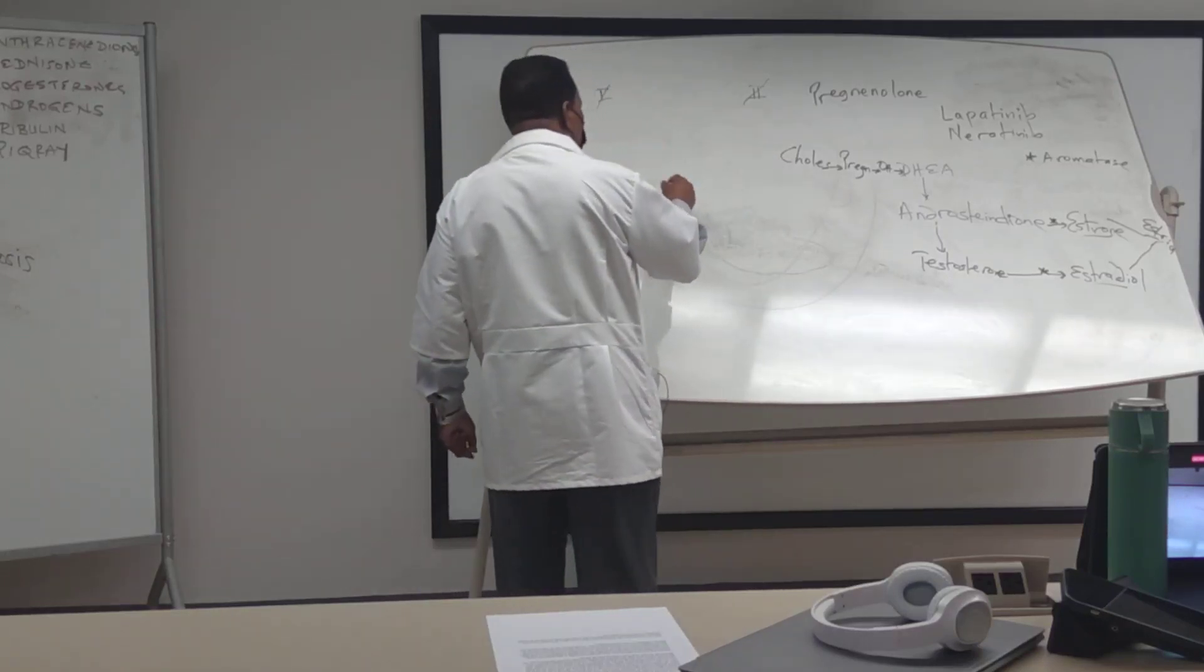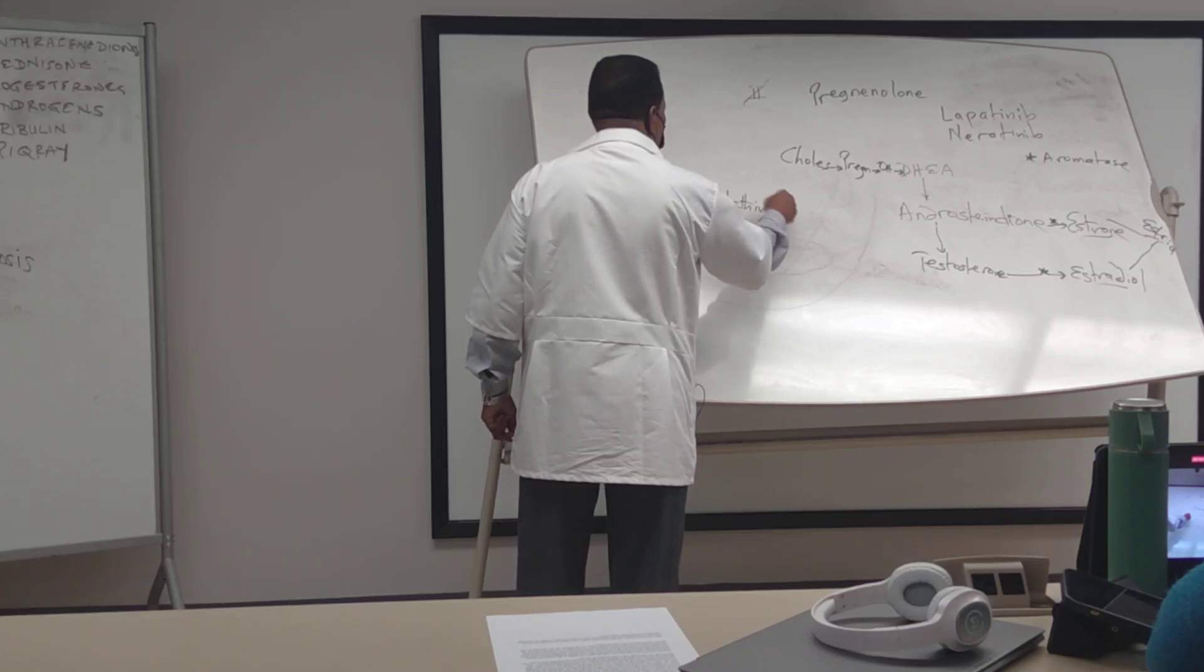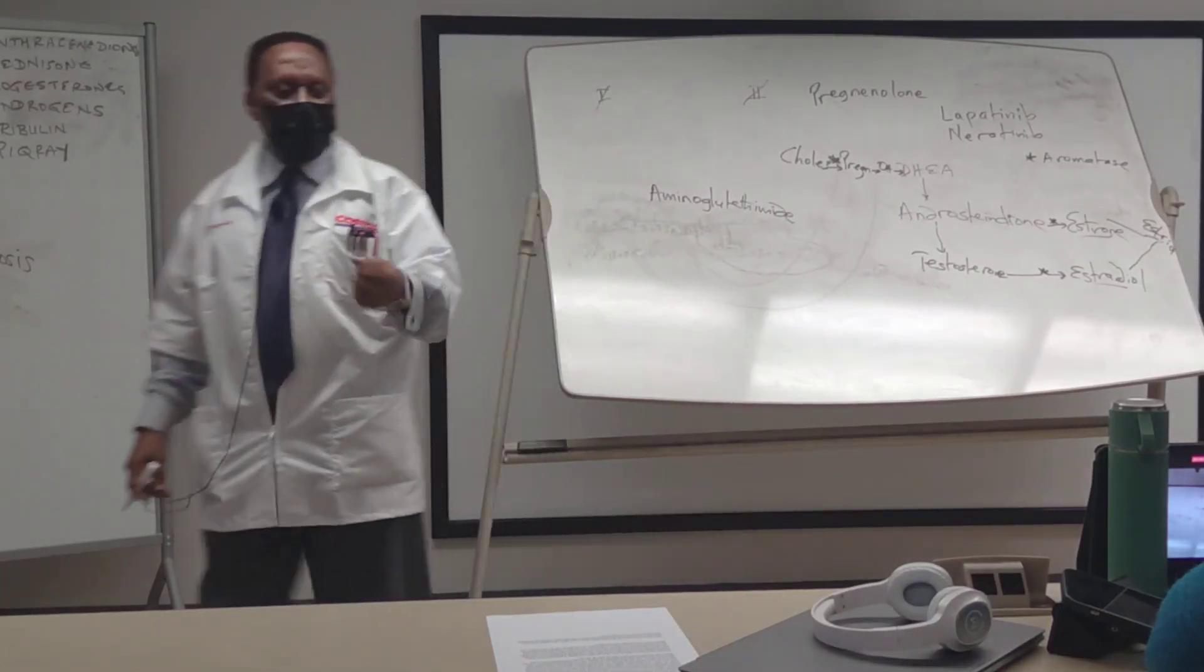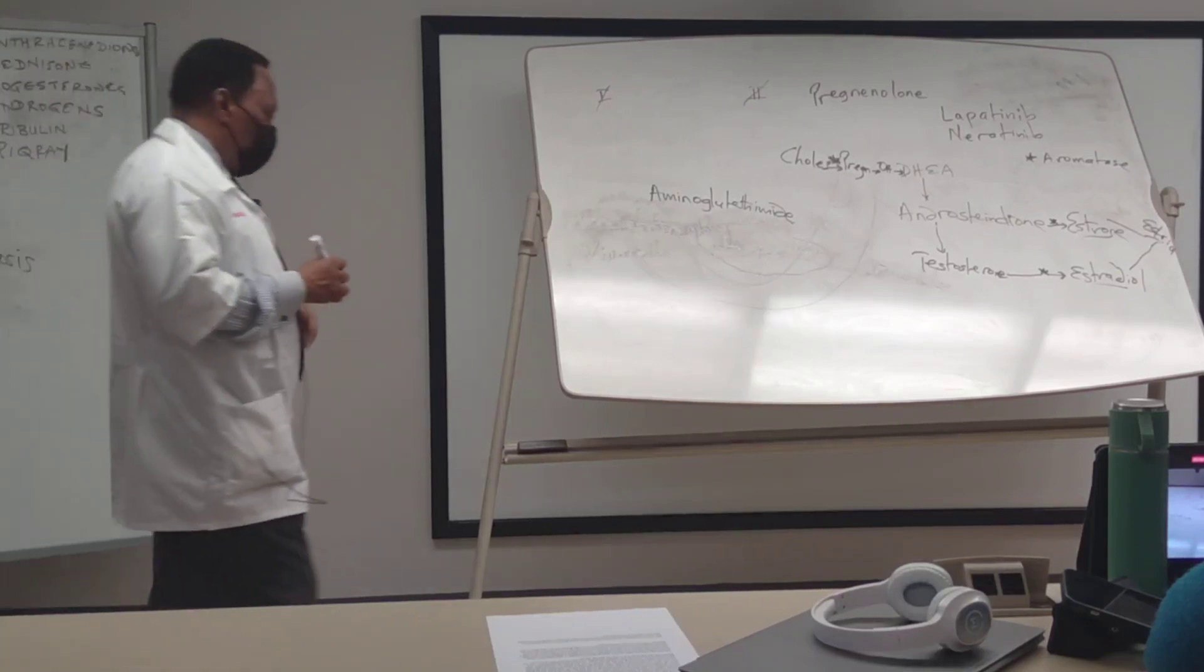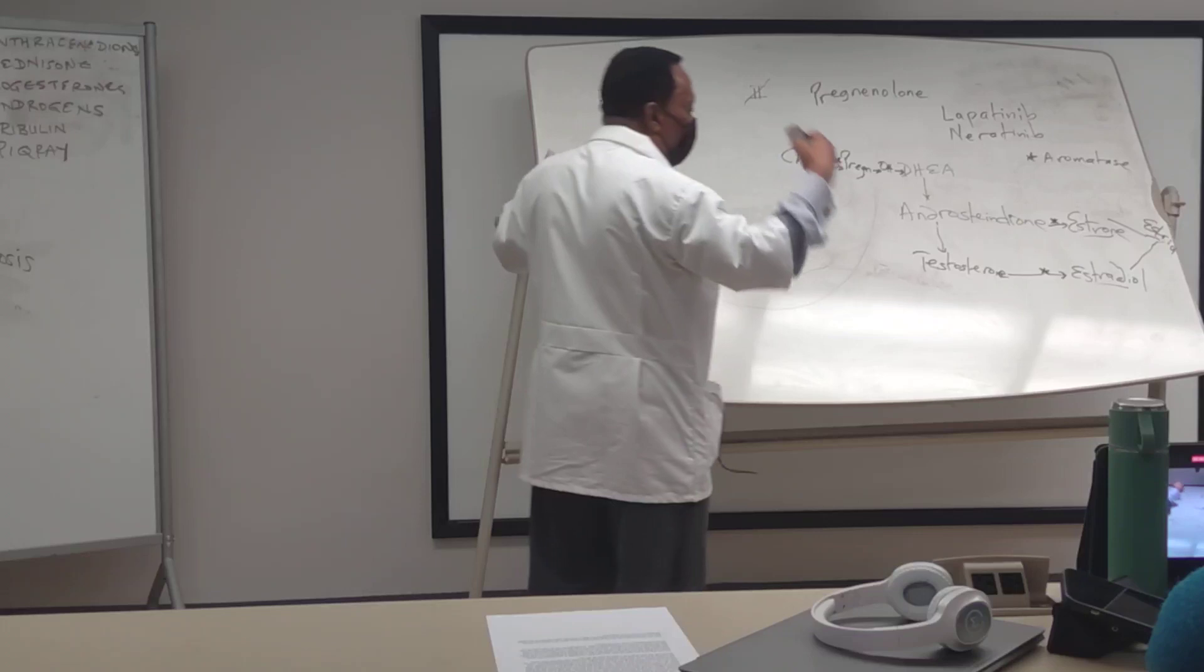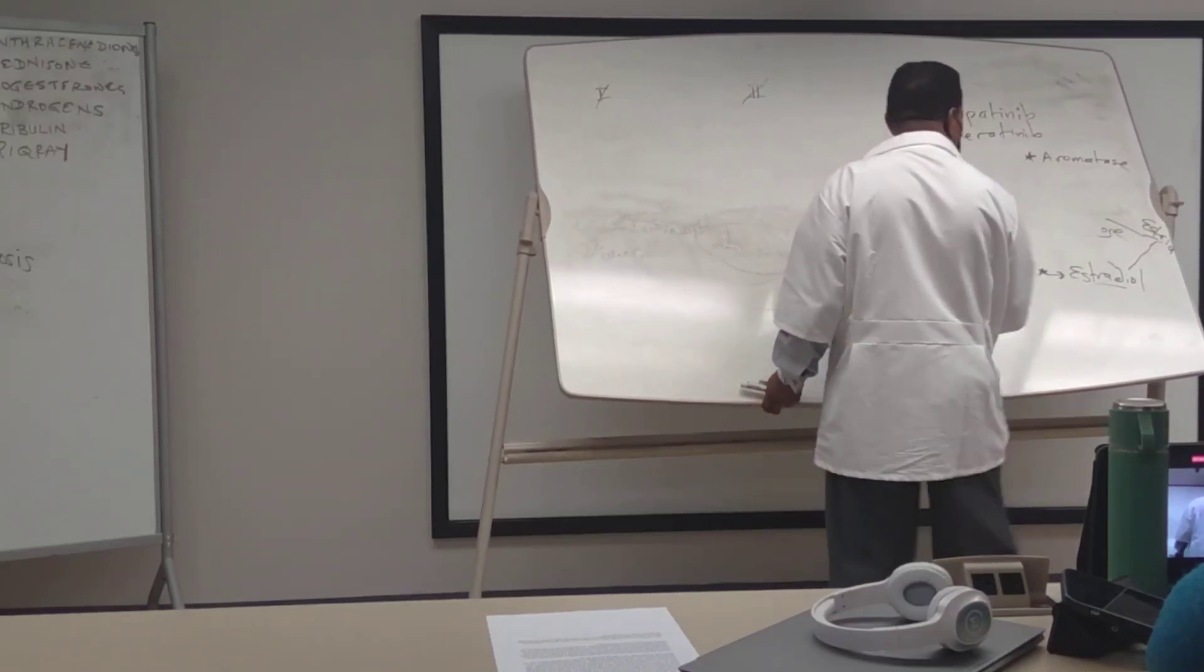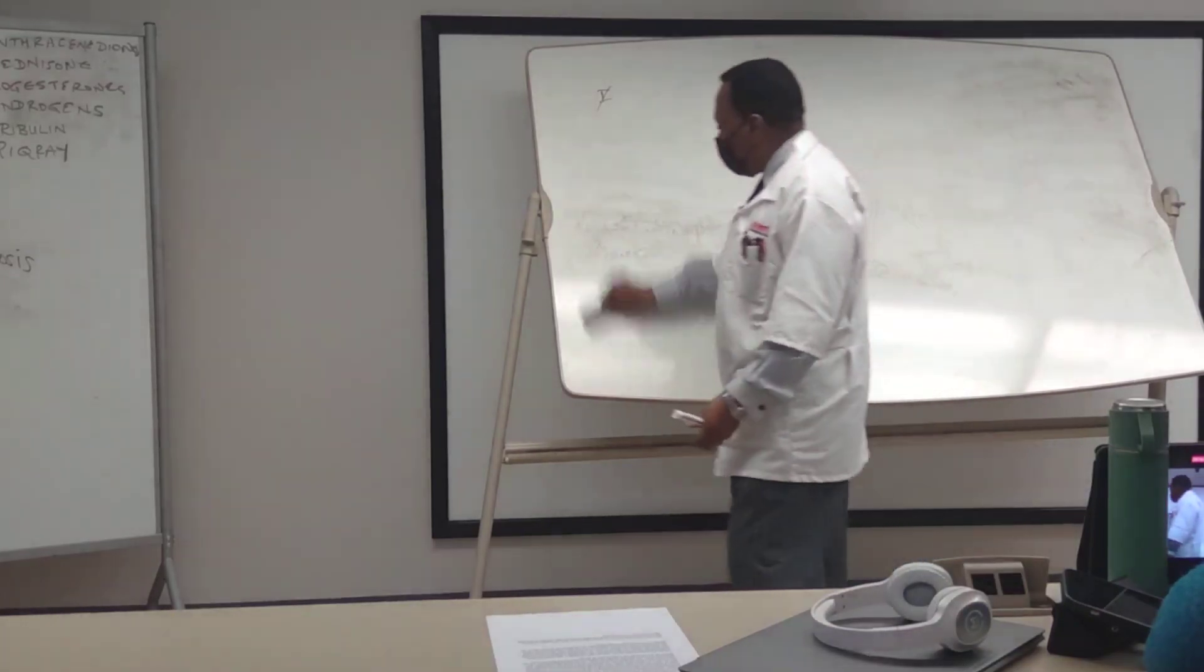And you have a compound called aminoglutethimide. And that one inhibits this step right here. Aminoglutethimide will inhibit conversion of cholesterol to pregnenolone. So the very first step is inhibited by your aminoglutethimide. So these are all inhibitors of the synthesis of estrogens. So if the estrogen is not available to that cancer cell, the cancer cell will not grow or divide into newer cells. That's the whole essence there.